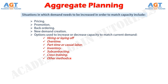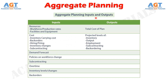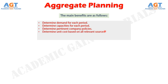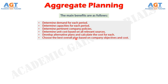Now let's look into the aggregate planning inputs and outputs. In this table we can see all the necessary inputs required in aggregate planning. The important ones include availability of resources, cost of equipment, and cost of inventories. The output generated mainly includes the total cost of plan and estimated levels of inventory and employment. These outputs are very significant in decision making. The main benefits of aggregate planning are: it helps to determine demand for each period, determine capacities for each period, determine pertinent company policies, determine unit cost based on all relevant sources, develop alternative plans and calculate the cost for each, and finally, choose the best overall plan based on company objectives and cost.